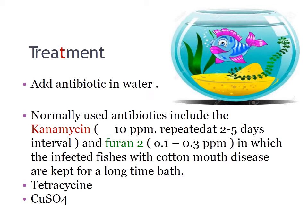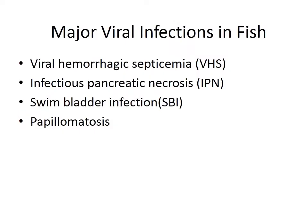Treatment for columnaris: add antibiotic in water. Normally used antibiotics include kanamycin at 10 ppm repeated at 2 to 5 day intervals, and furanace at 0.1 to 0.3 ppm, in which infected fishes with cotton mouth disease are kept for a long time. Tetracycline and copper sulfate dip are also preferred.